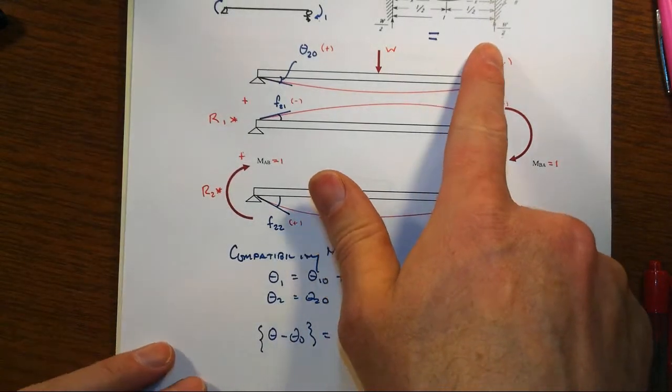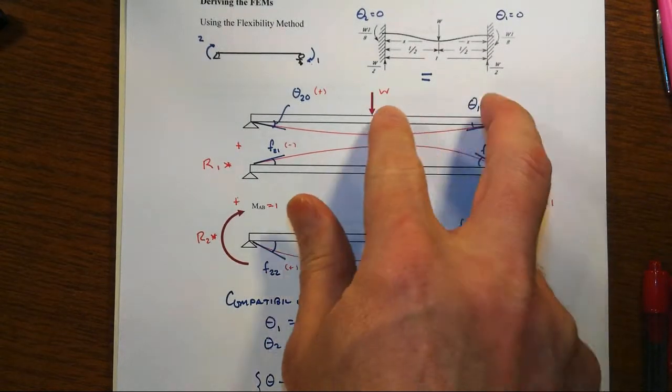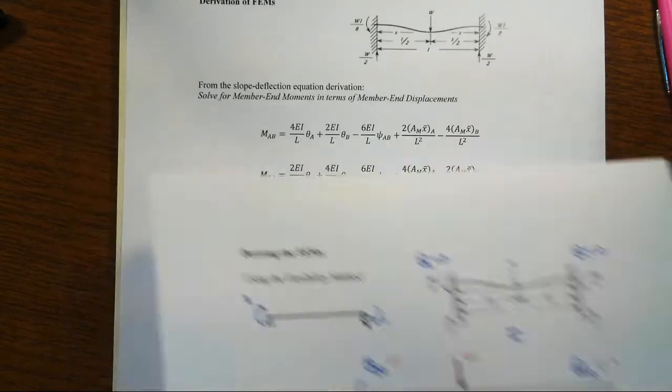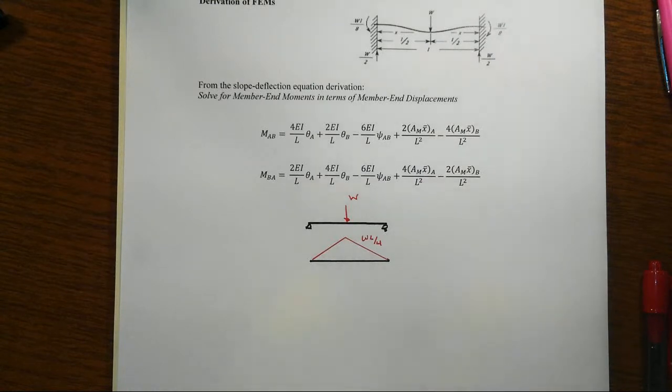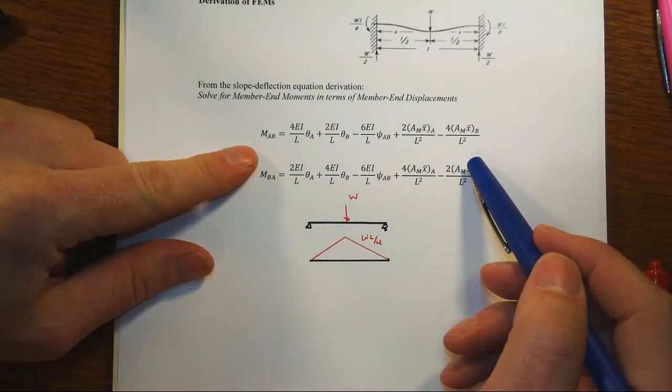That's the process anyway. We're not going to go through the numbers of how we find those redundant reactions. The other approach you might have used to conduct the derivation comes from the derivation of the slope deflection equation itself.